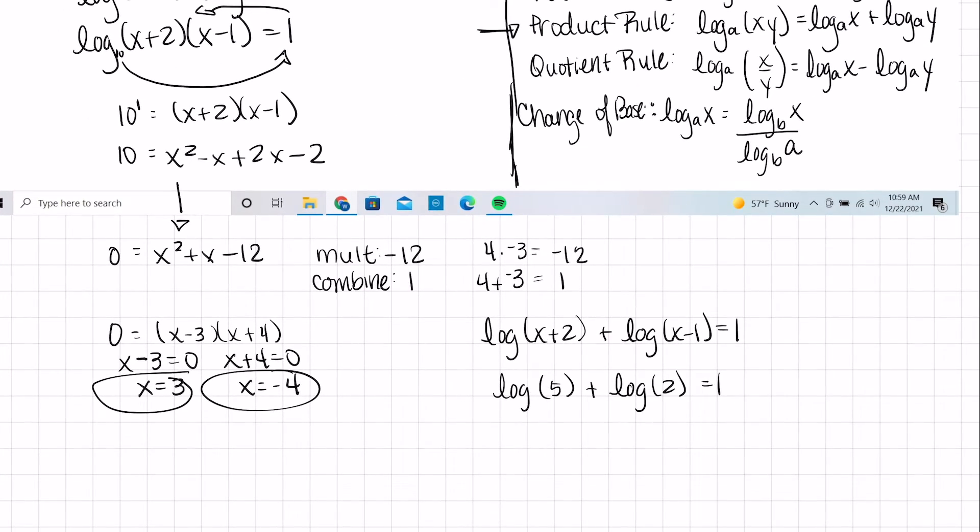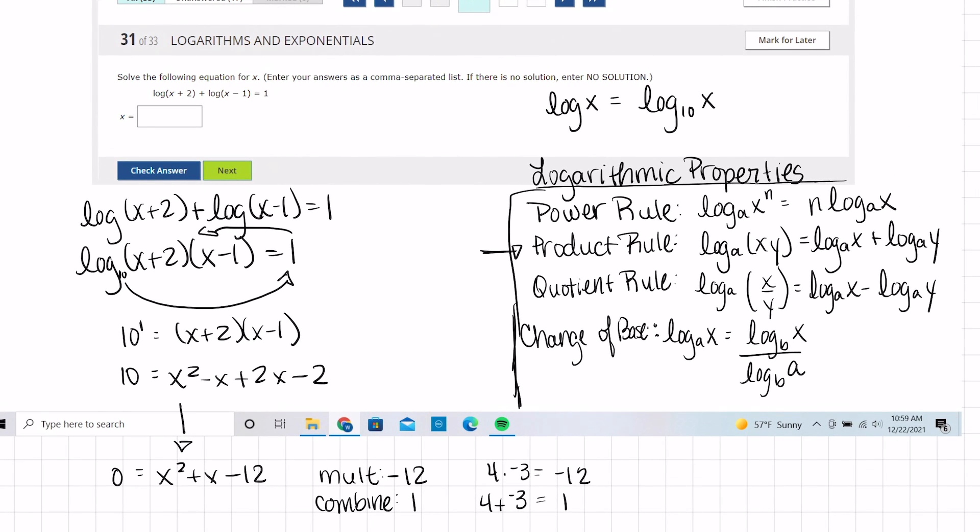If I go back over here, now I try negative 4. So that's going to give me negative 4 plus 2 plus log of negative 4 minus 1 is supposed to equal 1. Well, that's log of negative 2 plus log of negative 5. And I know this isn't possible because I can't take 10 to any power and produce a negative number. So that means negative 4 is out, and we get an answer of x equals 3.